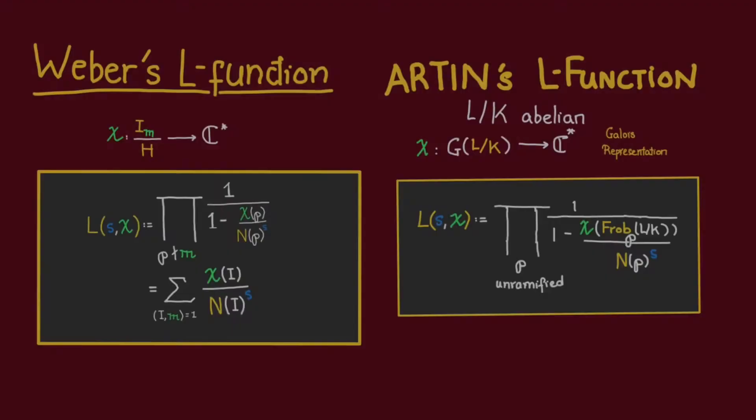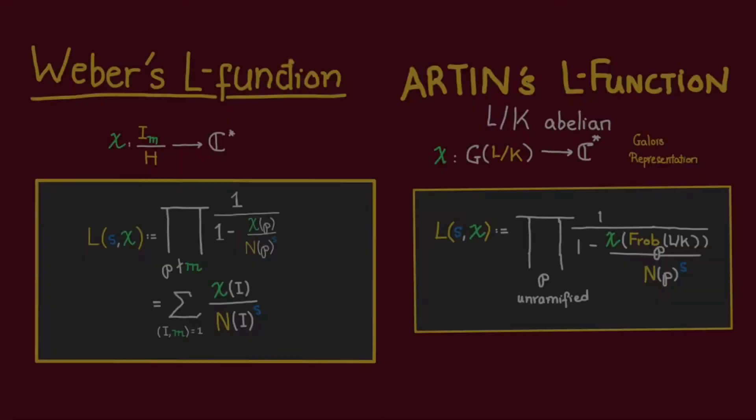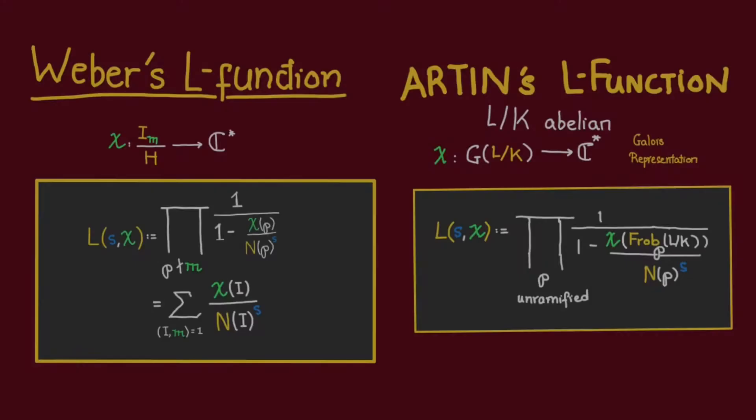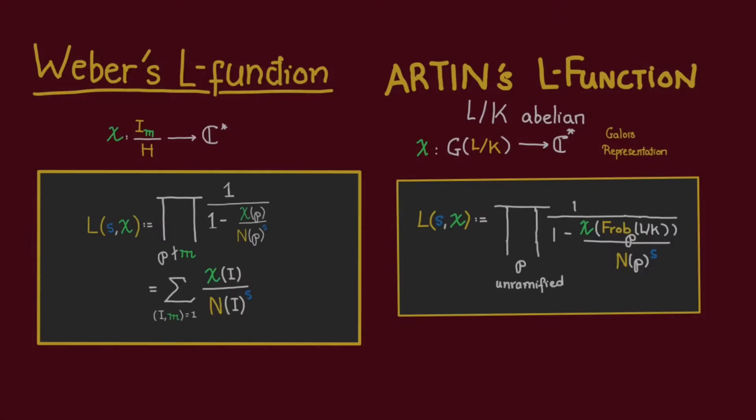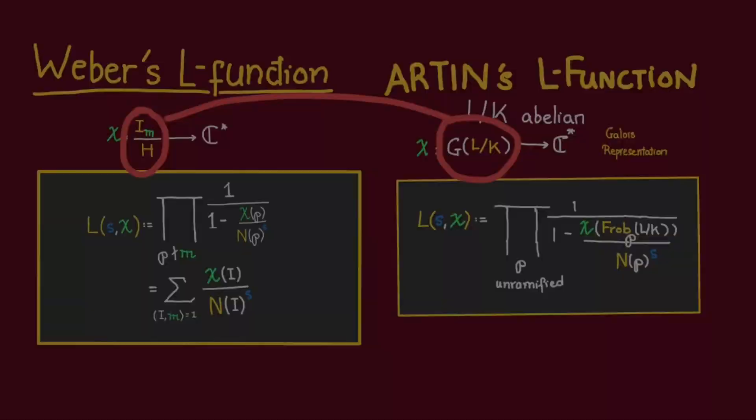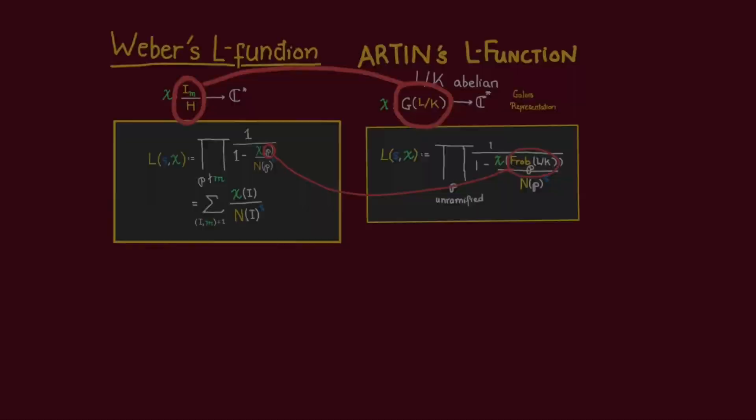As we've mentioned, whereas in Weber's L function we evaluate these characters at primes P, in Artin's L functions we are evaluating these characters at Frobenius P. This suggests that the way to link this generalized ideal class group to the Galois group is via sending every prime P to the Frobenius P map. And that's indeed the definition of the Artin map.